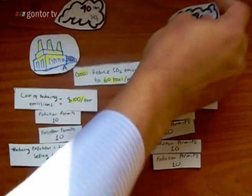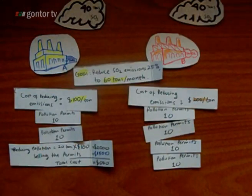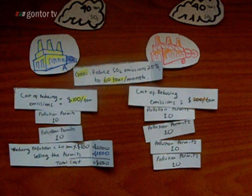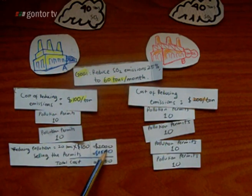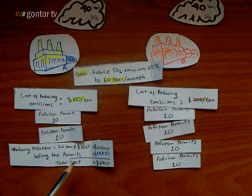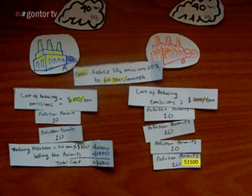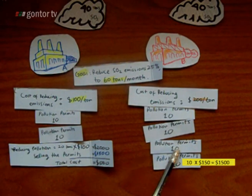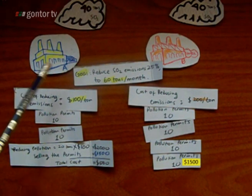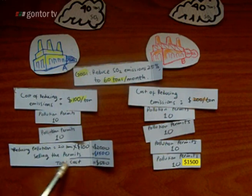Company A will reduce their pollution by 20 tons, so it will cost 20 tons multiplied by $100, which equals $2,000. But they sell the permits — 10 permits at $150 each — for a total of $1,500. So finally, company A will have a total cost of $500.